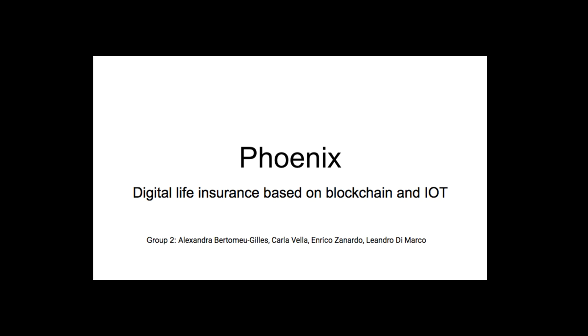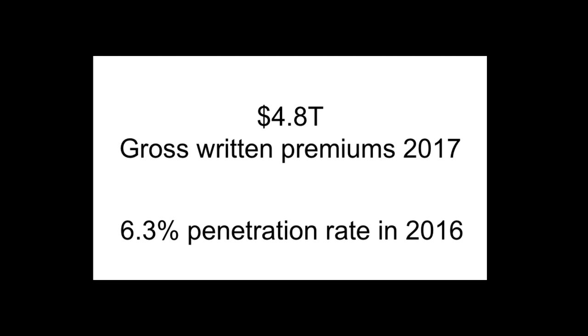Let me start with two simple facts. The insurance industry reached 4.8 trillion of gross written premiums in 2017, all that while having a penetration rate of only 6.3% in 2016.